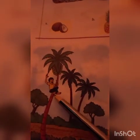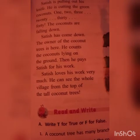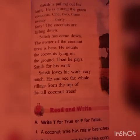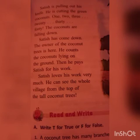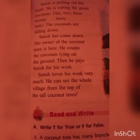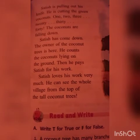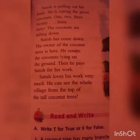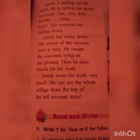Here you can see a man on the top of the coconut tree. His name is Sadeesh — he has reached the top of the coconut tree. Sadeesh is pulling out his knife and he is cutting the green coconuts — one, two, three, 20, 30, 40. The coconuts are falling down. You might have seen people like Sadeesh who come to climb up the coconut tree and bring coconuts down for use at home. Sadeesh is pulling out his knife from his pocket and cutting the green coconuts.